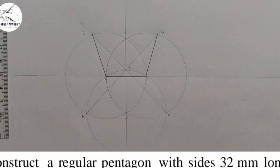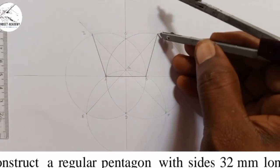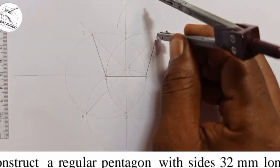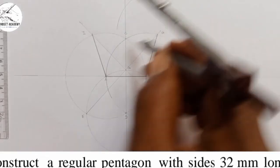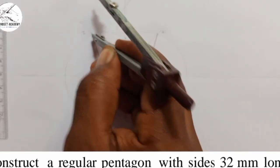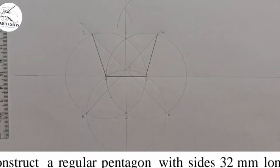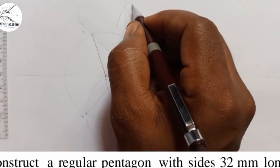Now, I am going to place my compass at point H. I will draw another circle, another arc. Place it at point I. I am going to draw another arc. So, where they meet will be J.